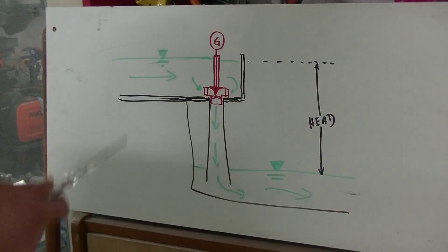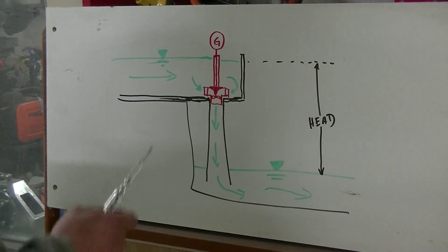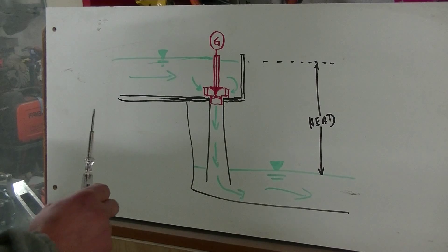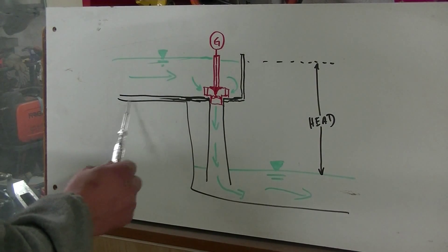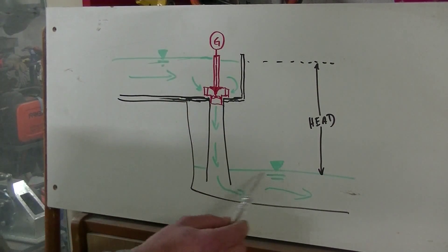To explain how the complete system works, I've drawn a simple chart. In practice, you need some kind of waterfall where water falls from a higher level to a lower level.